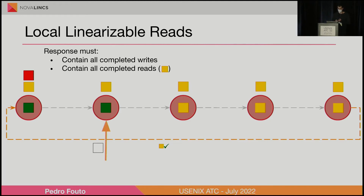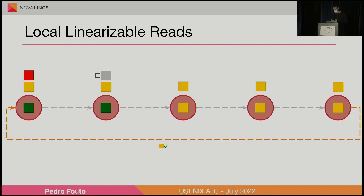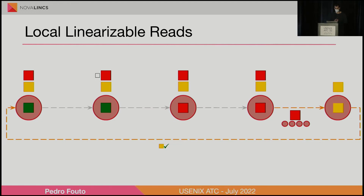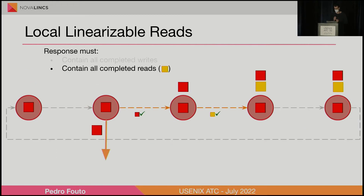Assuming we have a second read, we need to make sure this read contains the results of any previous reads. The reasoning is the same — we execute the same algorithm. By waiting for the acknowledge message of the red operation, we make sure that every pending operation, in this case the yellow one, is pushed through the chain and reaches us before that acknowledgement, so that we can respond to the client.